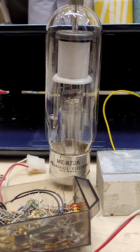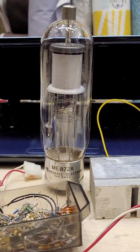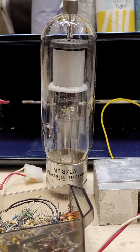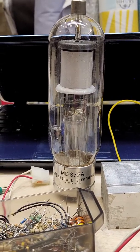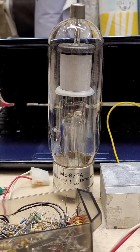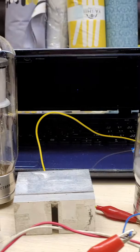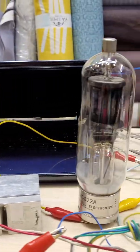This is a mercury arc rectifier lamp from the 1940s, made by Marshall Electronics in the USA. The part number is ME-872A. This is the same tube as this one.